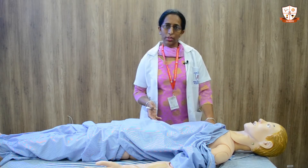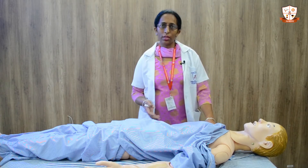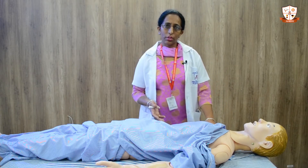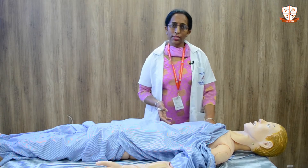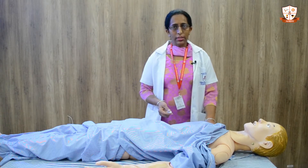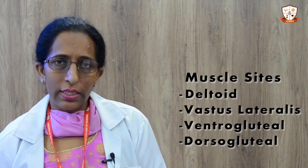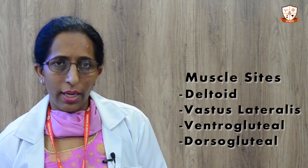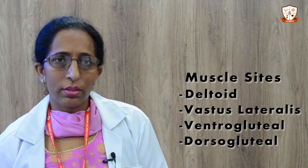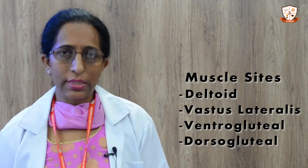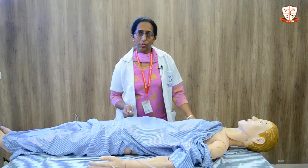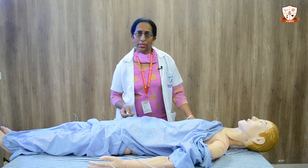Let's discuss about the sites of intramuscular injection. The first site is the deltoid muscle site, second is the vastus lateralis muscle, third is the ventrogluteal muscle site, and fourth is the dorsogluteal muscle site. Let's discuss the first site, that is the deltoid muscle site.